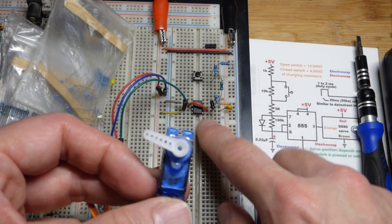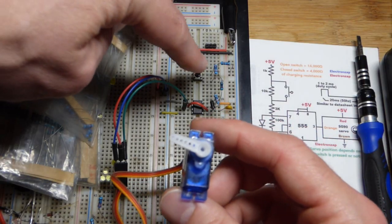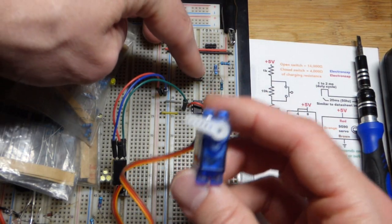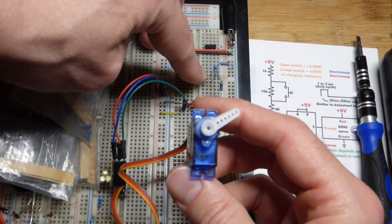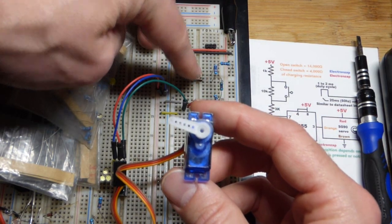Now we have another circuit where I use the 555 timer to control the position of the servo. But instead of an adjustable position, we have two adjustable positions instead of a range. We get the second position when I press the button.